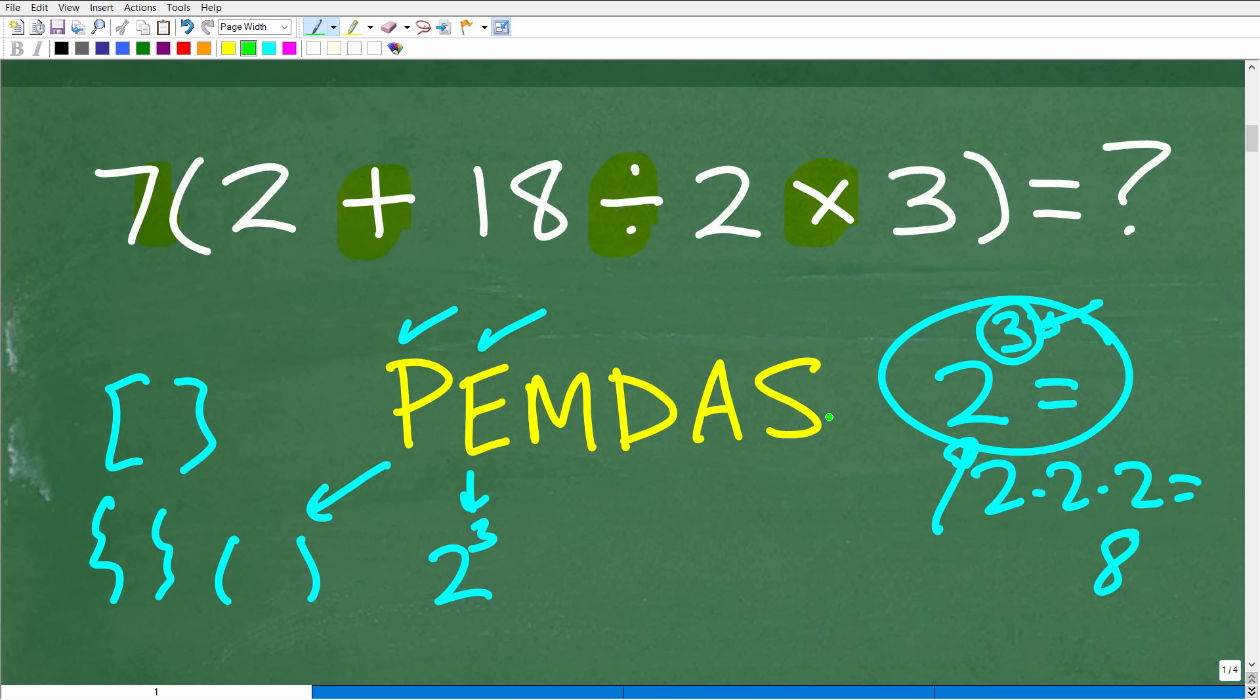So we have MDAS. And let's just kind of just tell you what these stand for. This stands for multiplication. D stands for division. A addition. S for subtraction. So a lot of students, okay, think, oh, I must now do multiplication first, because I'm going from left to right, then division, then addition, then subtraction.